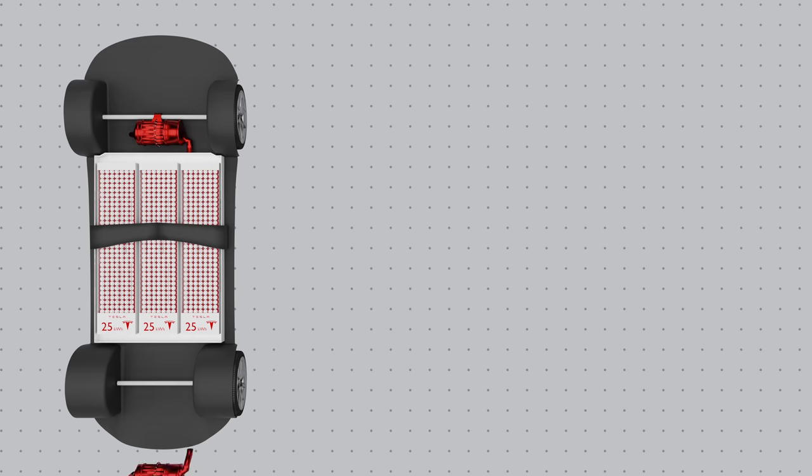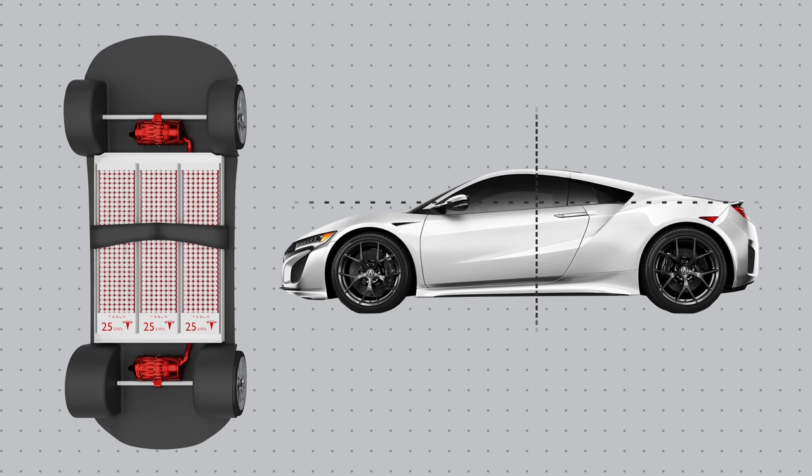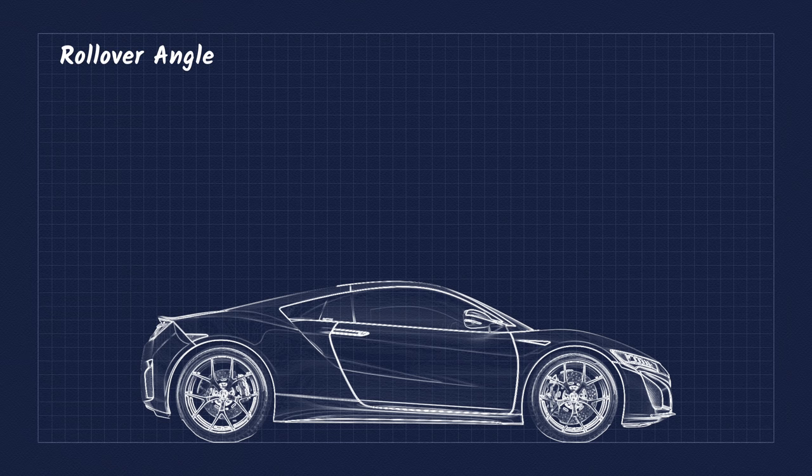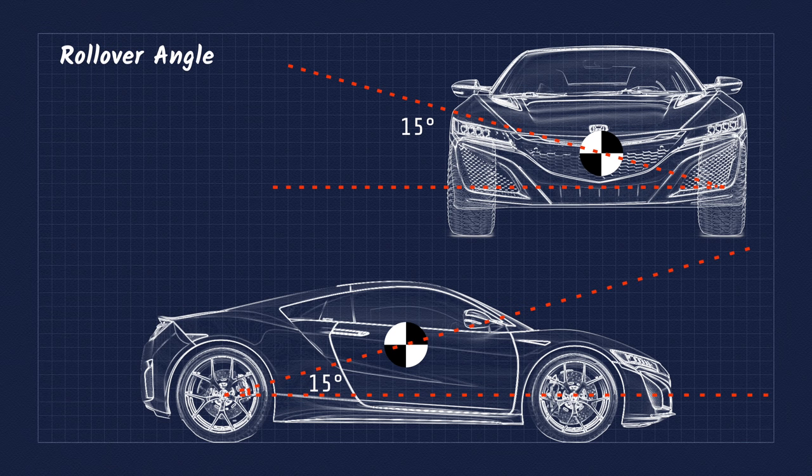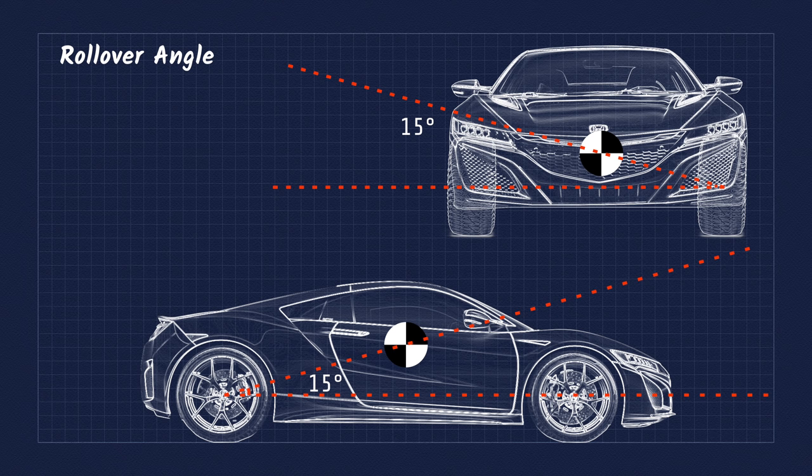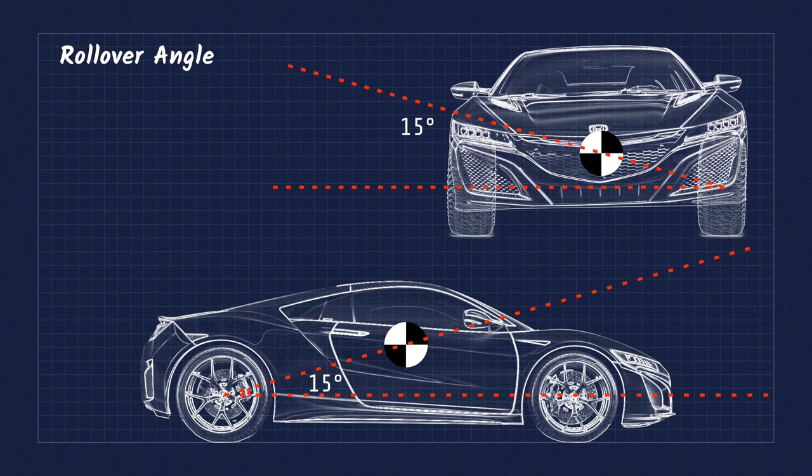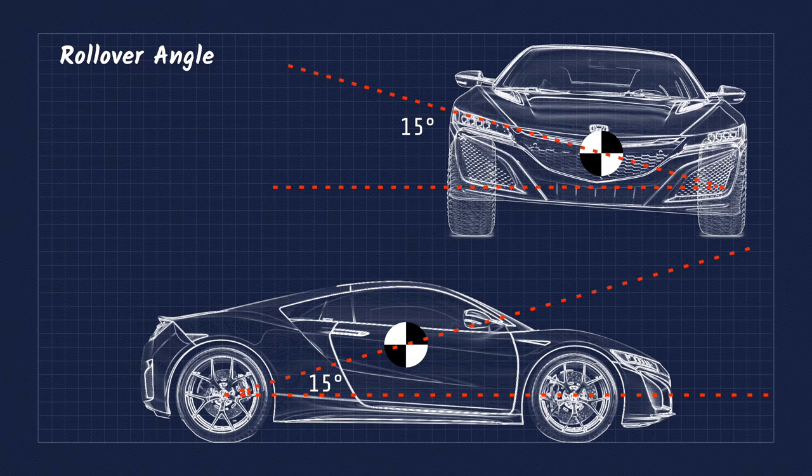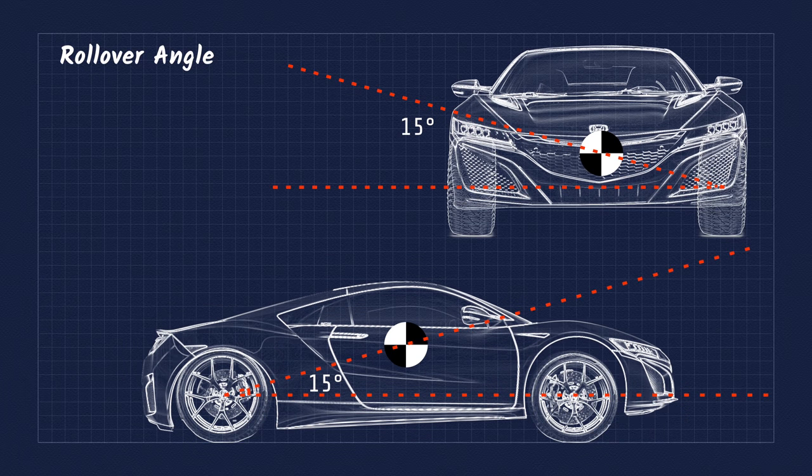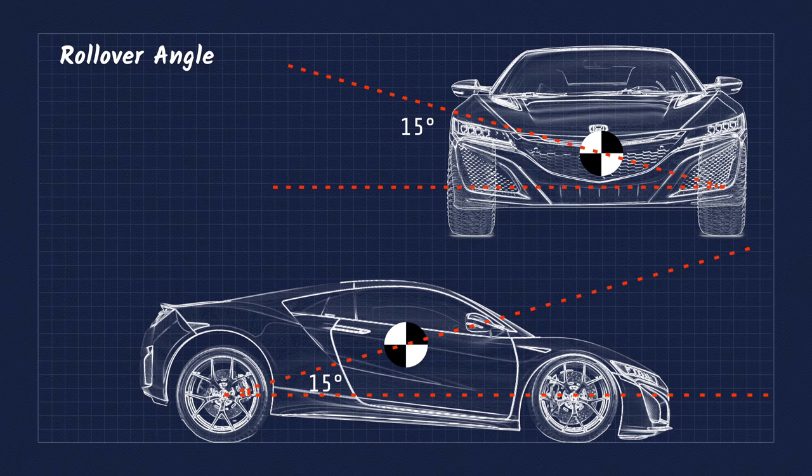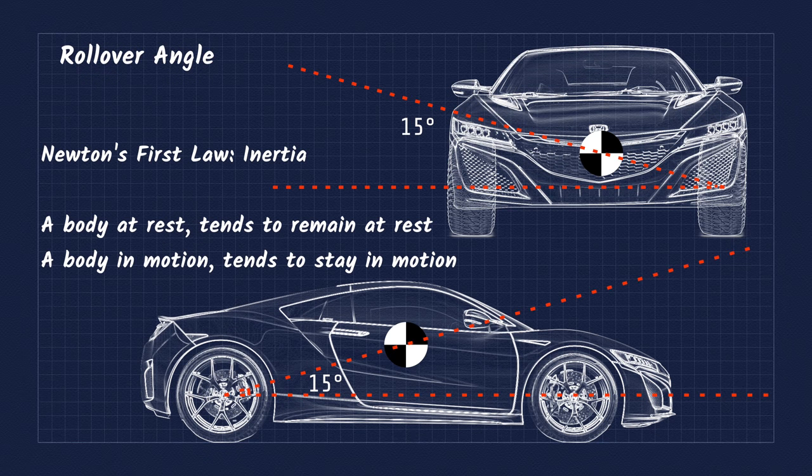For maximum handling and cornering performance, there are a few key elements. The first is having the center of gravity as low as possible and the second is weight distribution from front to back. The rollover angle is the angle from a line drawn from the contact wheel to the car center of gravity. This affects two things: the car's rolling from side to side in turns, and also its tendency to pitch forward and back during acceleration and braking. Sir Isaac Newton's first law of motion is that a body at rest tends to remain at rest.